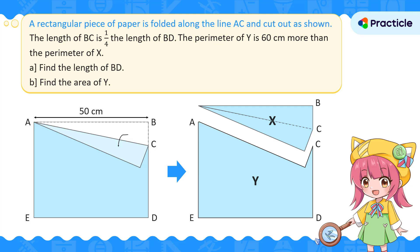A rectangular piece of paper is folded along the line AC and cut out as shown. Let's try to imagine what we see when we fold and unfold the paper. When we fold and unfold the paper, this part — which forms a right-angle triangle — is the same as this part. Can you see that? This is going to be useful later on.